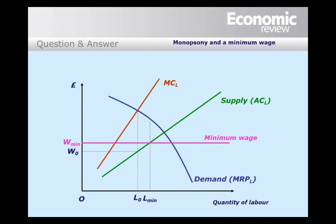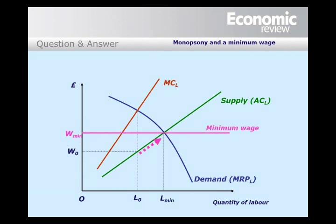Indeed, it's possible that if the minimum wage is set at this level W_min, the market could end up at the outcome that would have been achieved in a competitive market. So a minimum wage may not always increase the level of unemployment. I hope that was helpful — thank you.